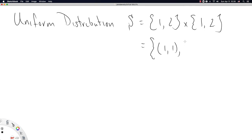Let's consider some hopefully simple examples. You could have a uniform distribution defined with a sample space of one comma two, the set of numbers one and two, and then the Cartesian product of the same set. So essentially this is the space one comma one, one comma two, that's the first element of the first set and the second element of the second, two comma one, and two comma two.